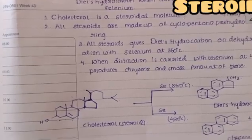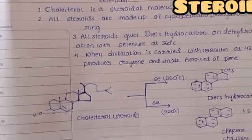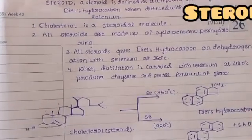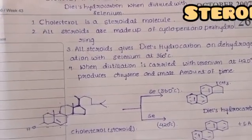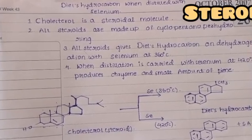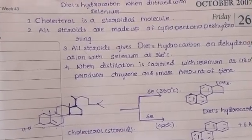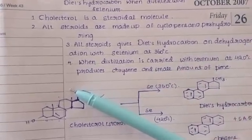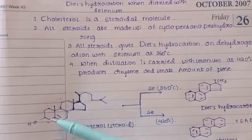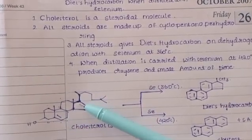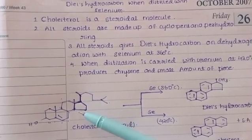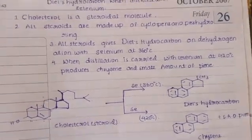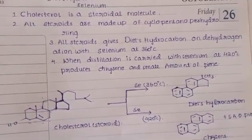Cholesterol is also a steroidal molecule. All steroids are made up of cyclopentanoperhydro rings. You can use the cyclopentanoperhydro ring and consider it as the steroid. This structure includes a five-membered ring — cyclopentano — as part of the cyclopentanoperhydro ring system.